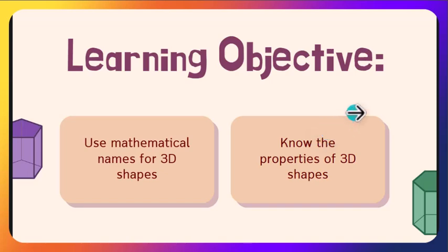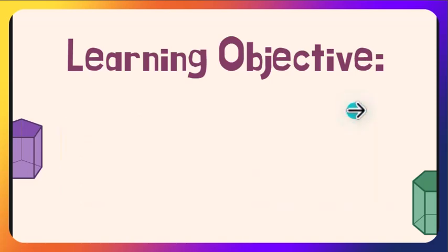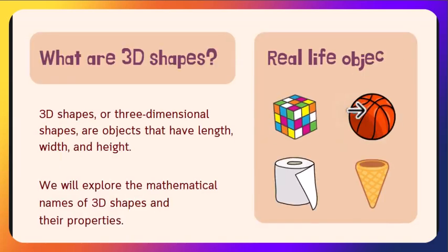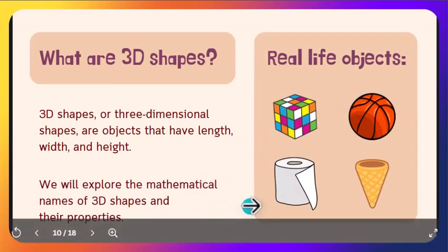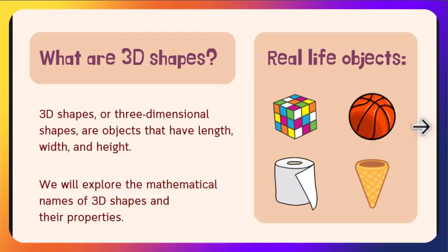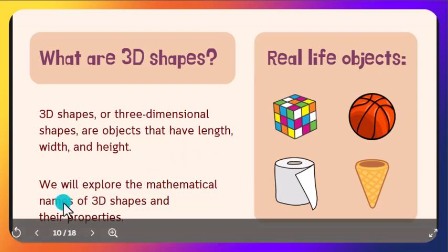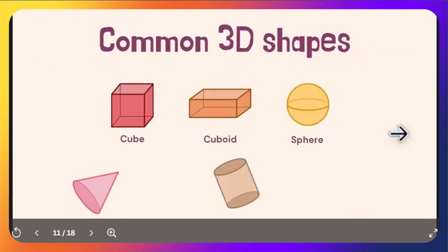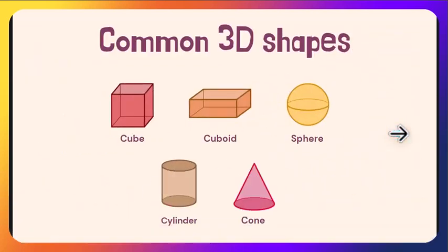Now let's learn about the properties of 3D shapes. These 2D shapes are used to make 3D shapes. Let's see how. 3D shapes are three-dimensional shapes — objects that have length, width, and height. We will explore the mathematical names of these 3D shapes and their properties.